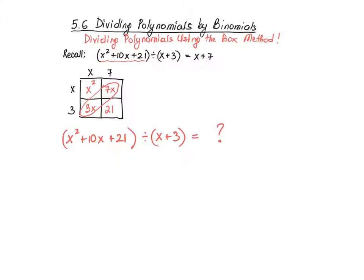Whatever that result is, I do know the following. That when I create a box, it will have two rows to be responsible for x and 3. And I don't know yet how many columns it's going to have because I don't know what my expression as my quotient will be. But whatever that expression is, the resulting expressions inside of the box should be equivalent to my dividend of x squared plus 10x plus 21 in some shape or form.